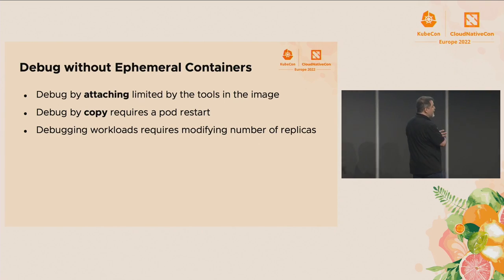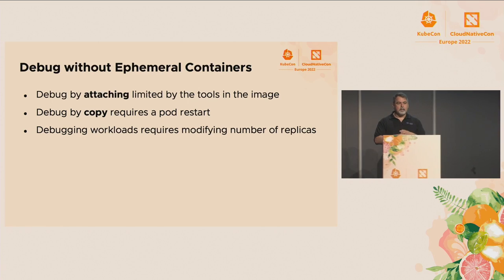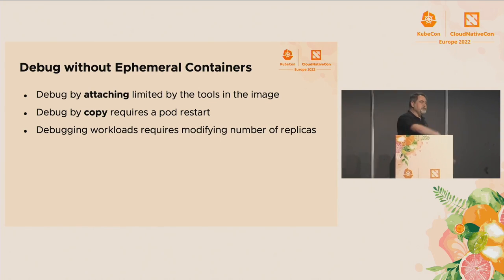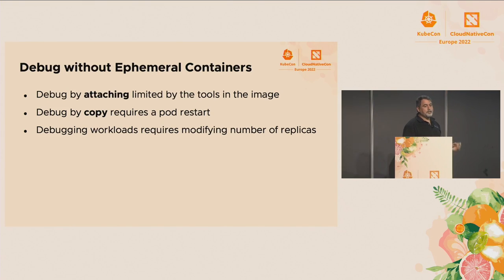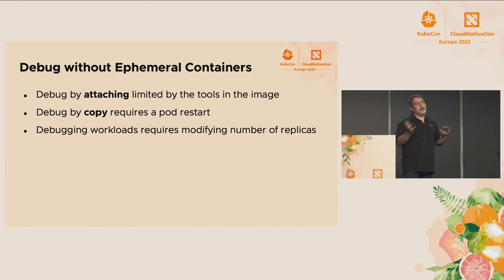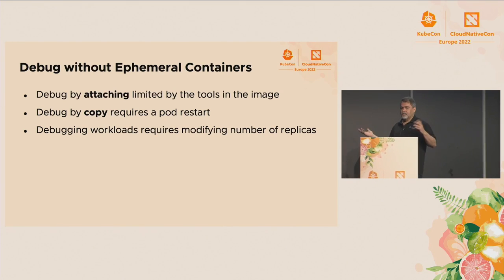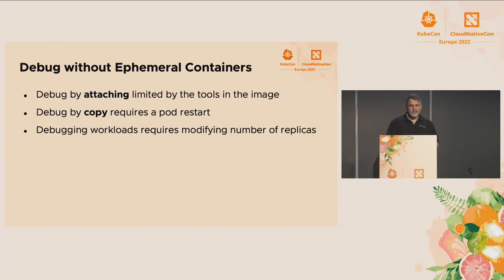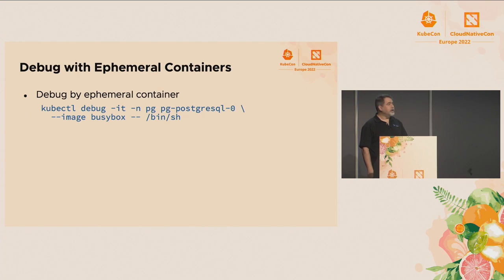Debugging without ephemeral containers: you can either attach or copy. If you debug by attaching, you need to include all your debugging tools in the container. If you want to change the container to include additional tools, you have to copy it — which requires some workarounds on your workloads. For example, if you're working with a deployment or a stateful set, you'll make a copy of the pod, the stateful set will see that its replicas have changed, start up another pod, and you'll have to point your services at the right pod. It's a bit of a mess, but once you get the hang of it, it works.